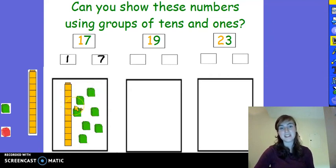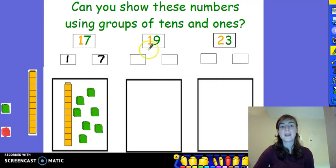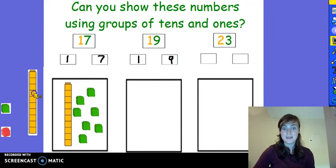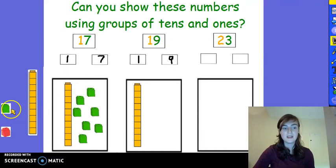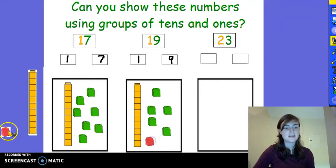We've definitely put 17 cubes in our box. Let's read the second number together. It is 19. Well done. We can break 19 into 1 ten and 9 ones or 9 cubes. Let's do it. 1 ten and 9 ones. 1, 2, 3, 4, 5, 6, 7, 8, 9.